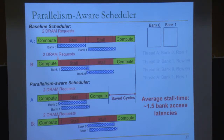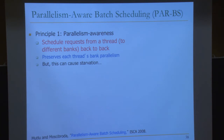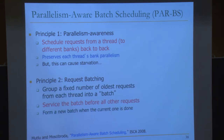ParBS has two components: request batching and within-batch scheduling. The idea of batching — group a fixed number of oldest requests from each thread into a batch, service the batch before all other requests, and form a new batch when the current one is done. This is actually an old idea from disk scheduling in the 1960s — disks batched requests from different programs to exploit sequential access while preventing starvation. Marked requests constitute the batch; marked requests are prioritized over unmarked ones.